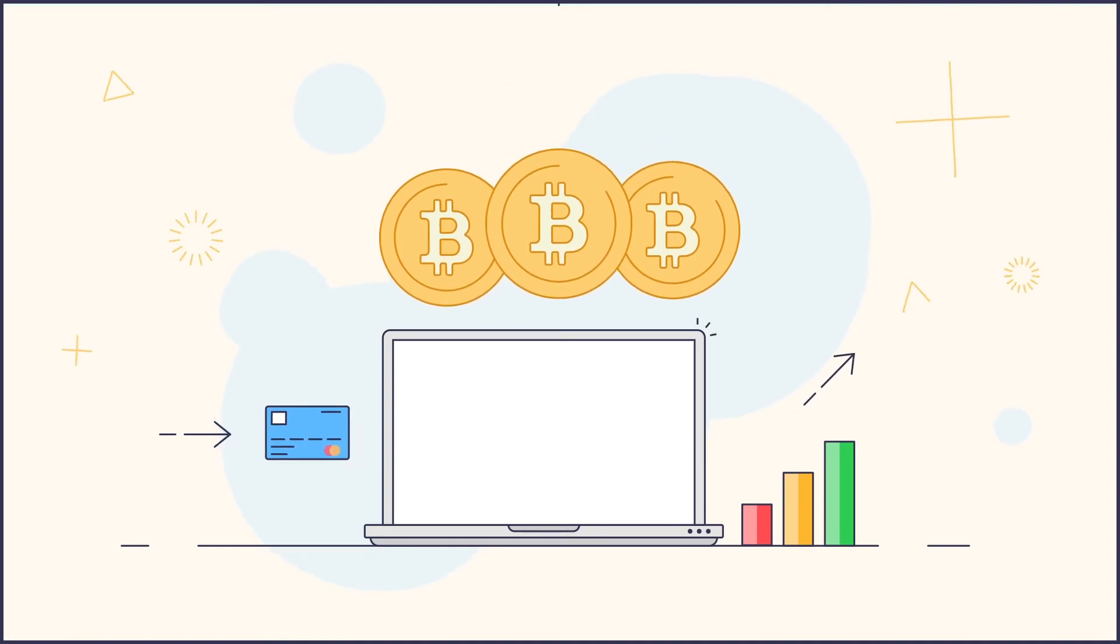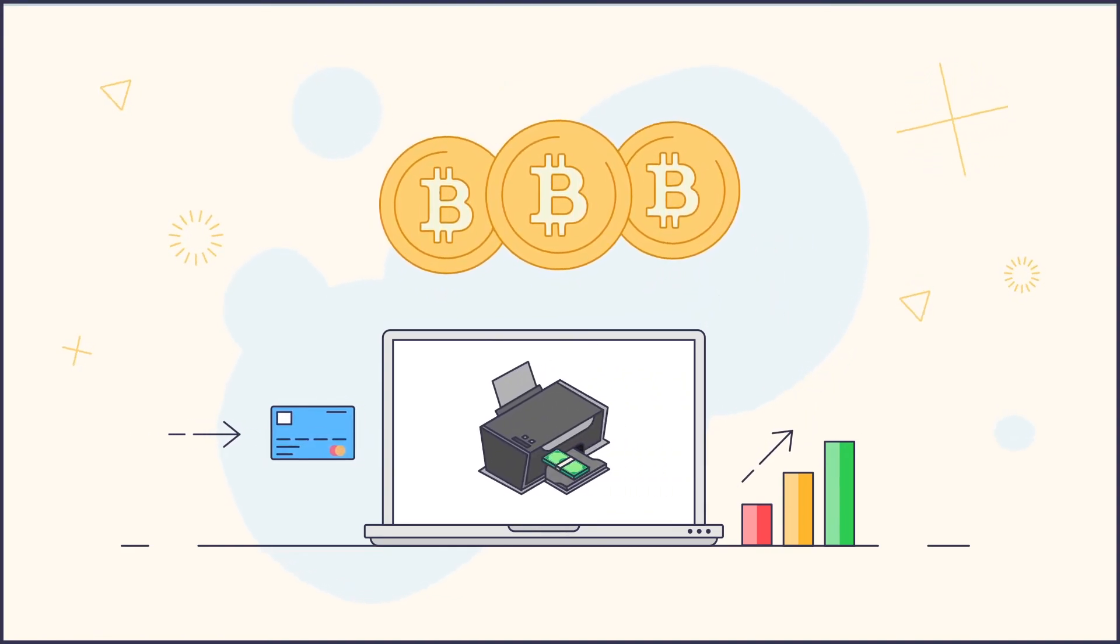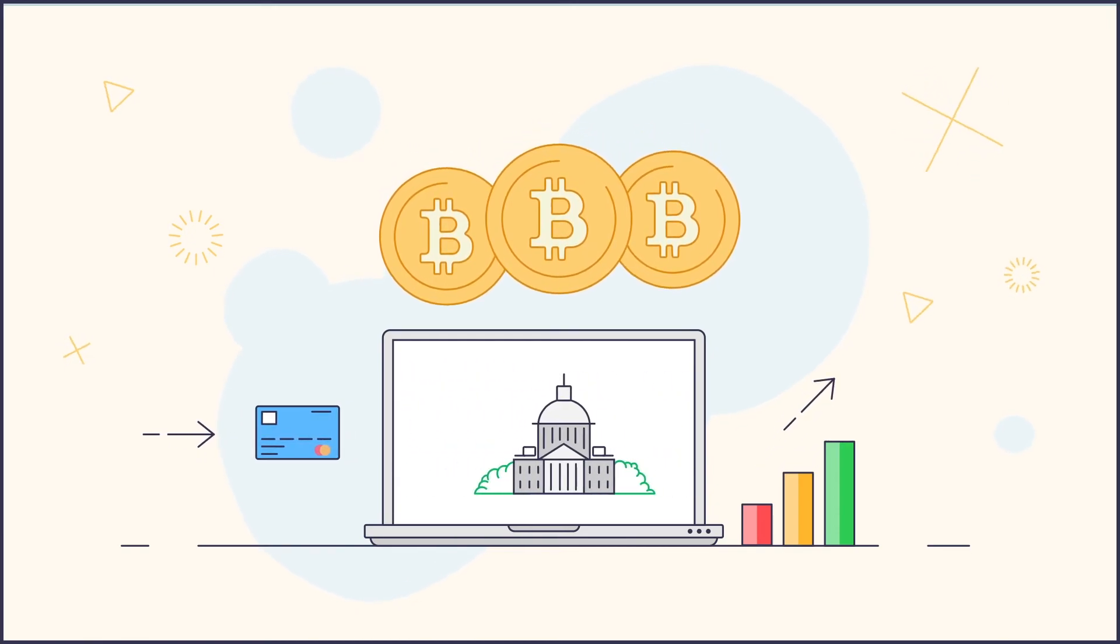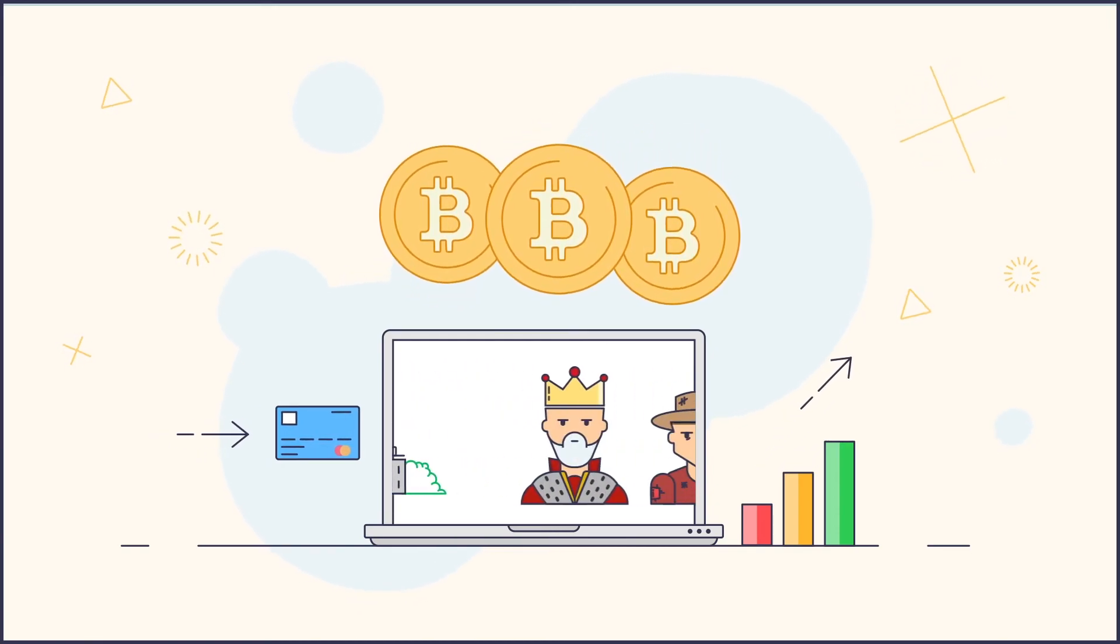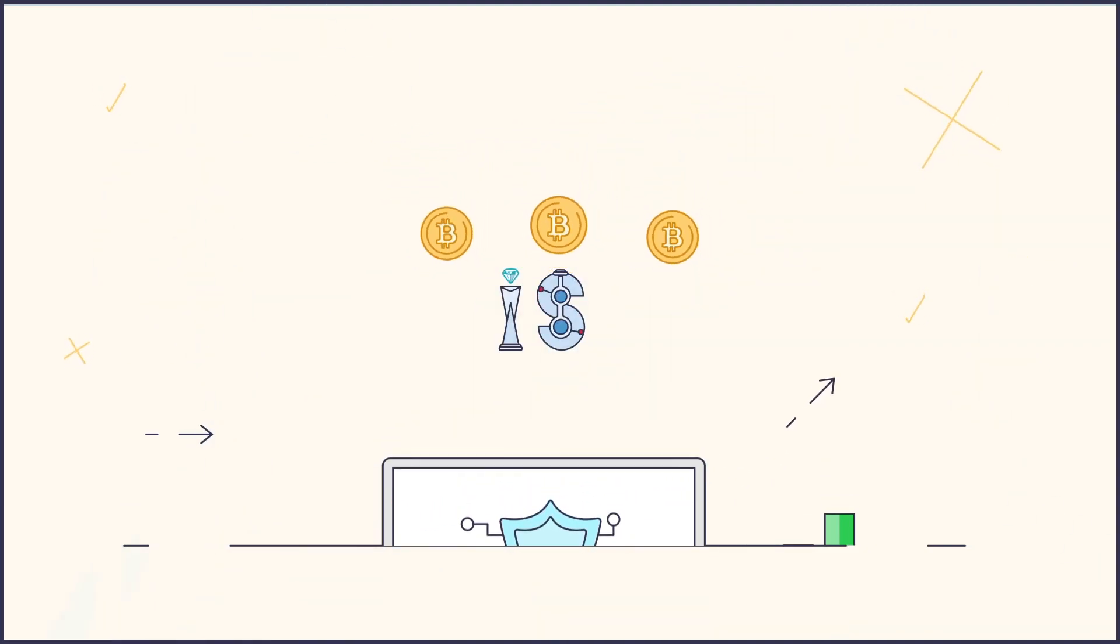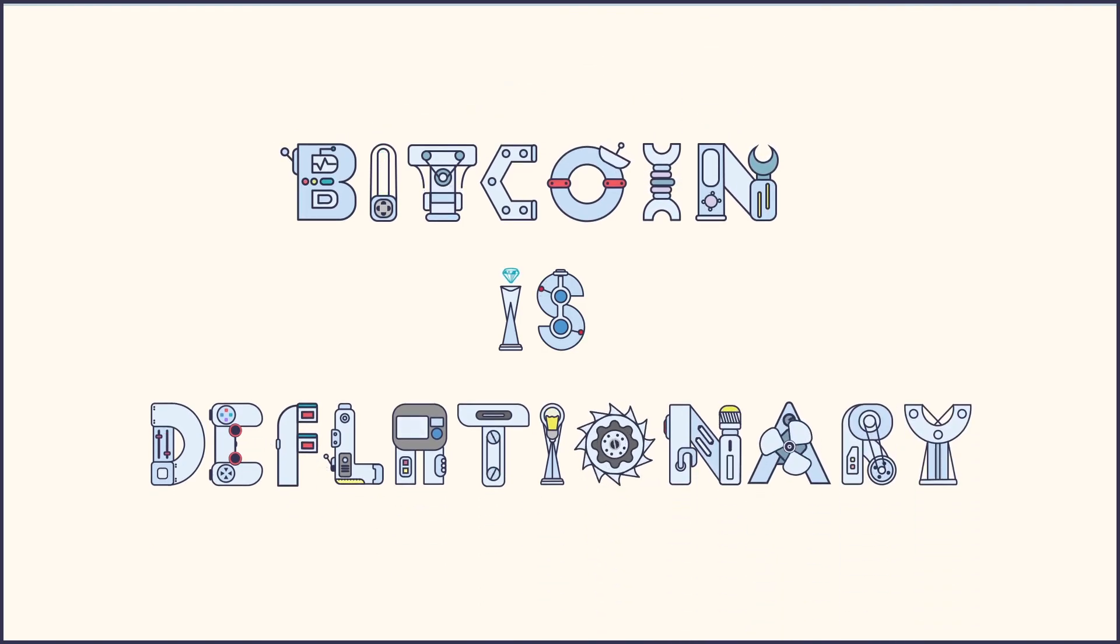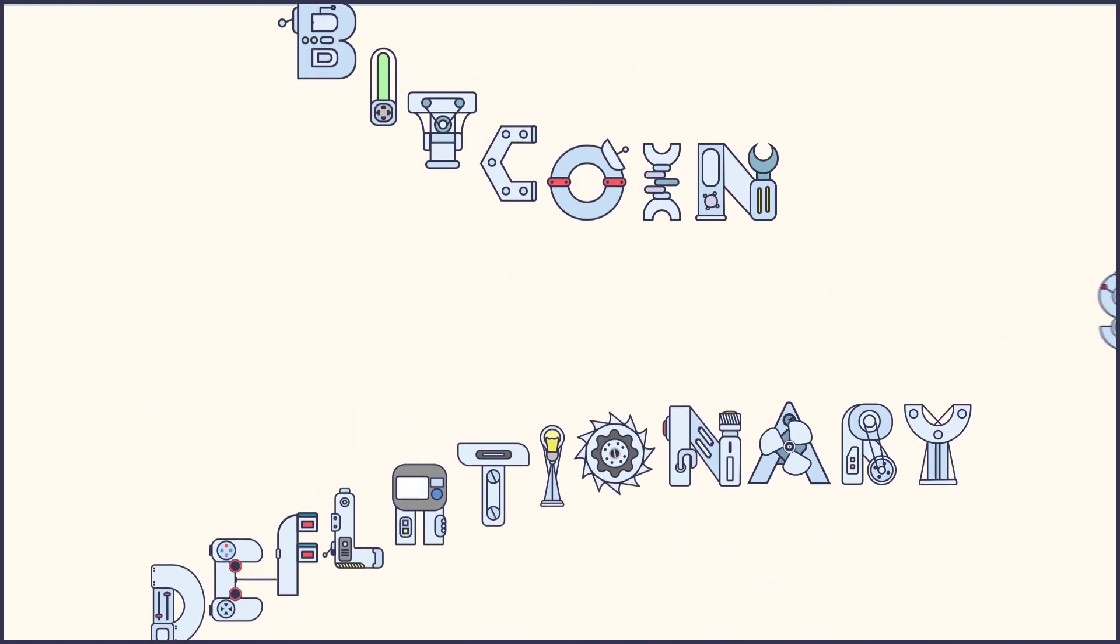For now, we can leave you with a possible solution to this problem. Bitcoin. Money no one can print more of. Money no government can control. Money nobody can be banned from. Money built by technological innovation. Money that is deflationary. If you would like to learn more about Bitcoin, you can watch our video that will explain it like you're five years old.